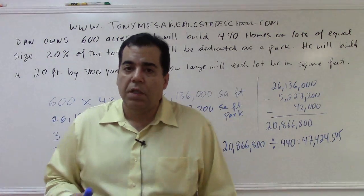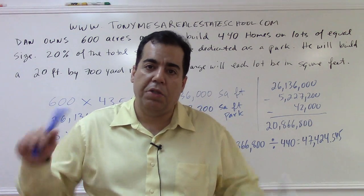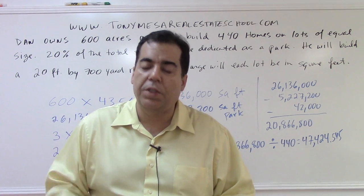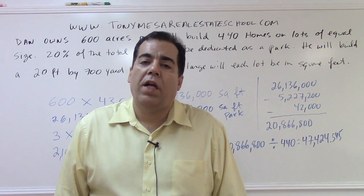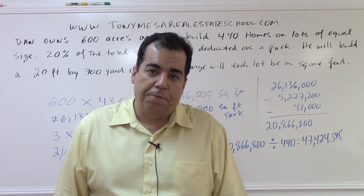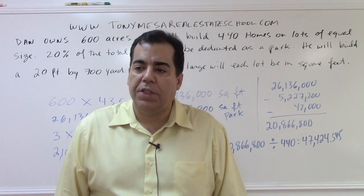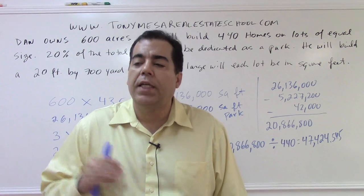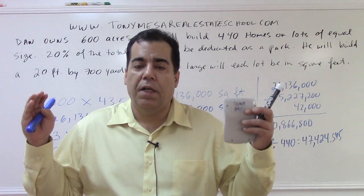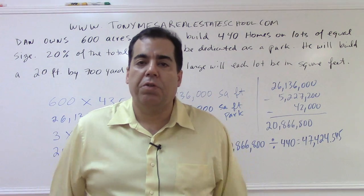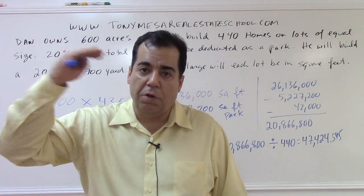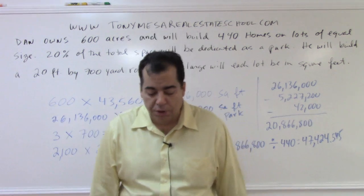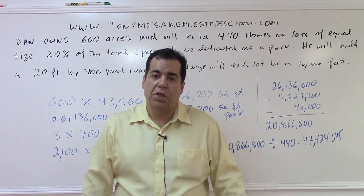To recap: you have total space, subtract usable deductions like the park and road, and you're left with usable space. Remember that one acre equals 43,560 square feet — you need that for the state exam. Watch out for mixed units on the road: convert yards to feet first, then multiply length by width. Subtract park and road from total, divide by number of houses, and you get the lot size.